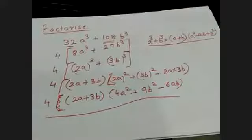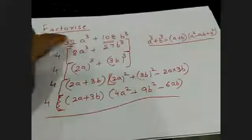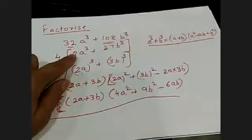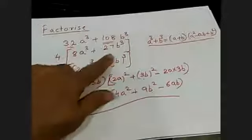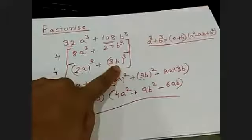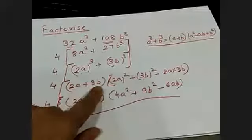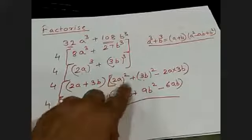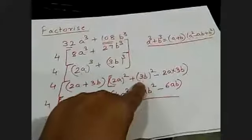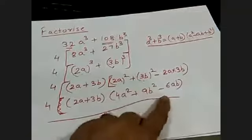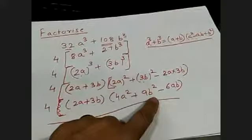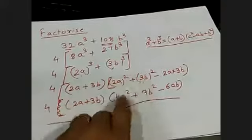Note down this question. How I solved it: 32 and 108 both had 4 as a common factor, so I took 4 out. Inside we had 8 and 27, which are both perfect cubes. Then I applied A cube plus B cube equals A plus B times A squared minus AB plus B squared. Remember to write the whole square properly — write 4a squared plus 9b squared minus 6ab. Brackets are necessary.